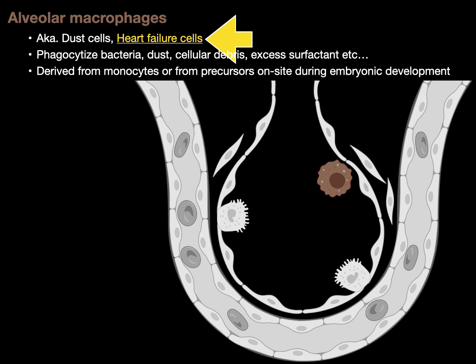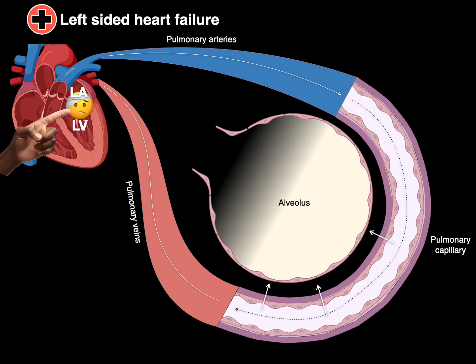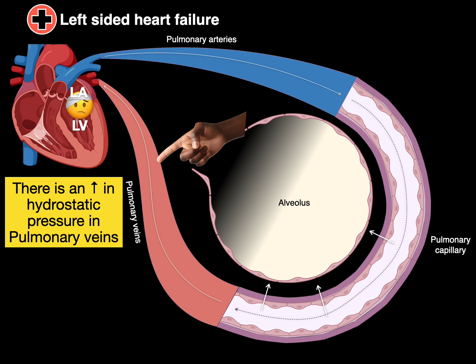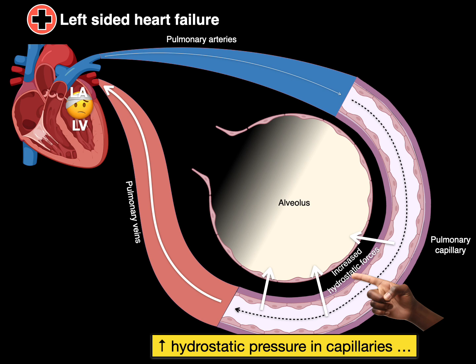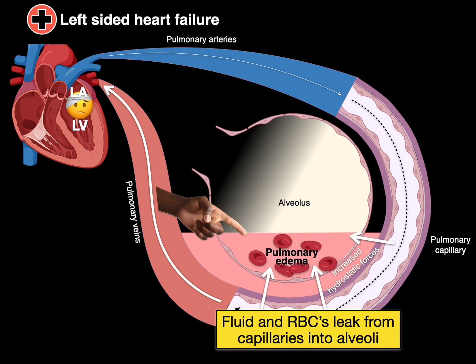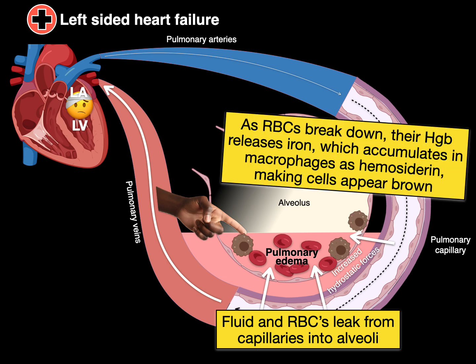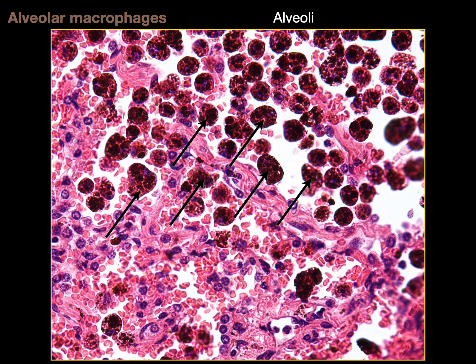They're also called heart failure cells because in the context of left-sided heart failure, which causes an increase in hydrostatic pressure in pulmonary veins and pulmonary capillaries, fluid and red blood cells leak from the capillaries into the alveoli. As red blood cells break down, their hemoglobin releases iron, which accumulates in these alveolar macrophages as hemosiderin, making the cells appear brown. This histopathology slide from a patient with left-sided heart failure shows alveolar macrophages marked by black arrows.